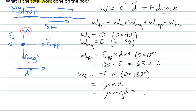And now we can put numbers into here. The coefficient is 0.3. The mass of the box is 40 kilograms. G is 9.8, and our displacement change is 5 meters. And when we put that into our calculator, we get minus 588 joules. That's how much work friction did on the box as it moves along 5 meters.